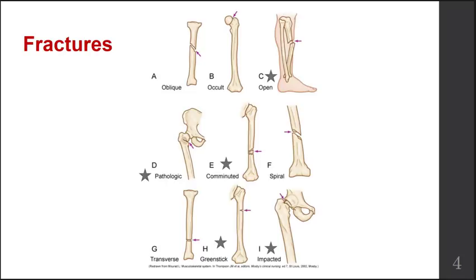Finally, impacted fracture. This occurs when the broken ends of bone are jammed together by the force of the injury — it's a fracture in which one broken fragment of bone wedges into another. For example, if somebody jumped from a very tall building and landed on their legs, that force could cause impaction where you have jamming of the ends of one bone into another. It becomes a lot more complex for repair.